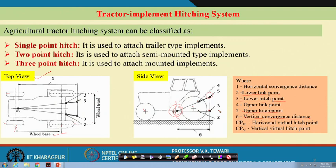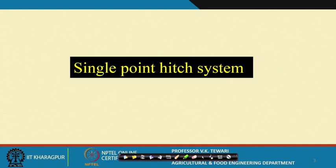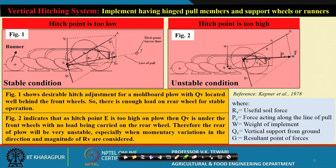The horizontal hitch point CpH is shown in the diagram. When seen in the top view, this is the location of the horizontal hitch point. Now we will talk of the single point hitch and how different implements are connected to it. The vertical hitching system involves implements having hitched pull members and support fields or runners. There are two conditions encountered when larger implements are hitched to a single hitch point — we will focus particularly on the moldboard plows.